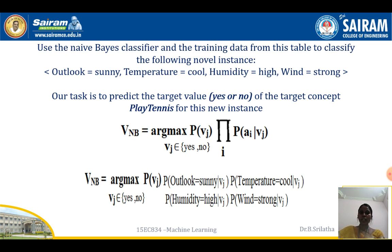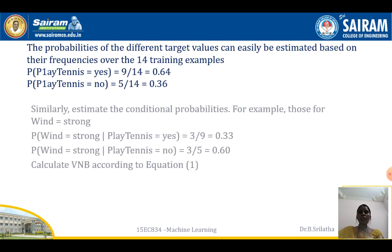Our task is to predict the target value — either Yes or No — for the concept of whether the person plays tennis. Using the Naive Bayes formula, v_NB equals argmax over v_j (Yes or No) of P(v_j) times the product of P(ai | v_j). We need to evaluate the product over the four attributes: P(Outlook=Sunny | v_j), P(Temperature=Cool | v_j), P(Humidity=High | v_j), and P(Wind=Strong | v_j).